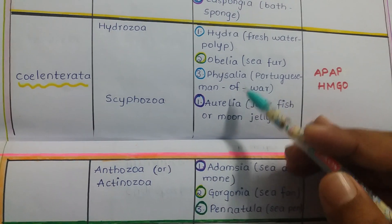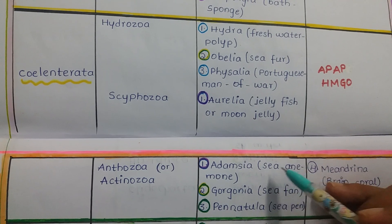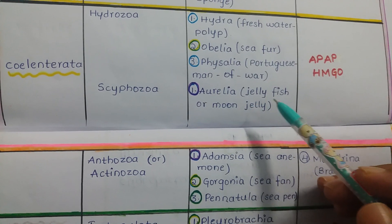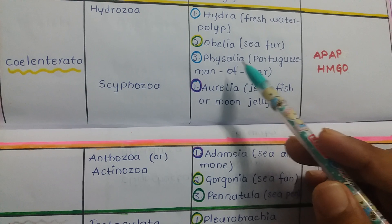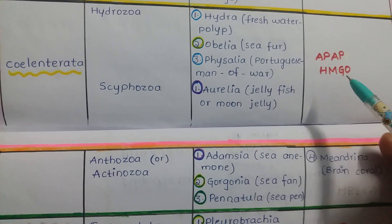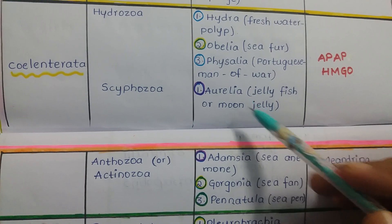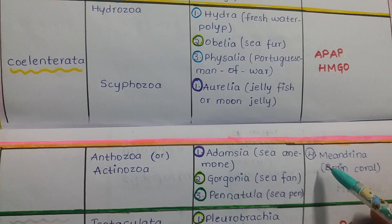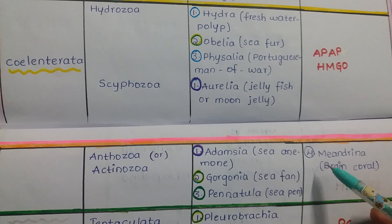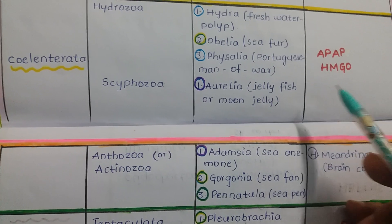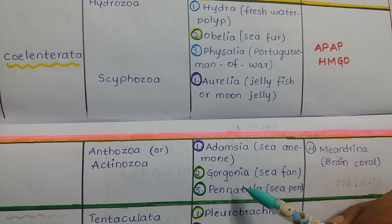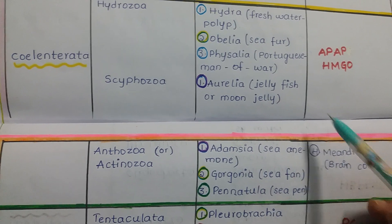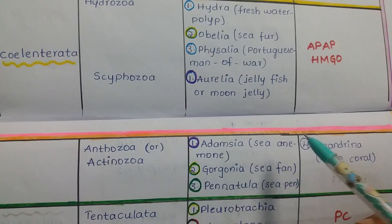To repeat: AP AP HMGO. First AP — A for Adamsia (sea anemone), P for Pennatula (sea pen). Second AP — A for Aurelia (jellyfish/moon jelly), P for Physalia (Portuguese Man of War). HM — H for Hydra (freshwater polyp), M for Meandrina (brain coral). G for Gorgonia (sea fan), O for Obelia.